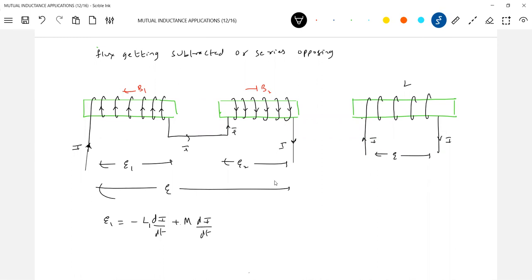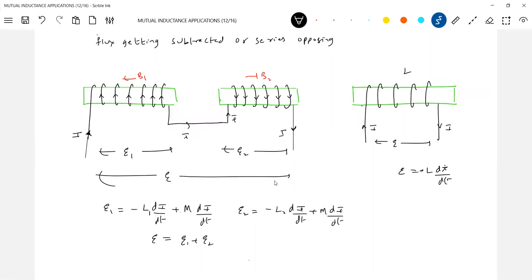If you take this negative, this should be positive. Similarly, what is E2? And what is E? L di by dt equivalent. So E is equal to E1 plus E2 minus of this one. So therefore effective EM induced inductance will be, so when they oppose minus 2M, when they oppose it will be minus 2M.